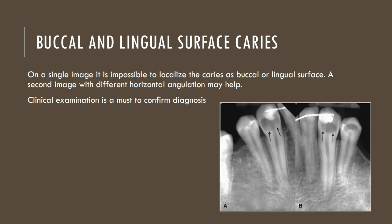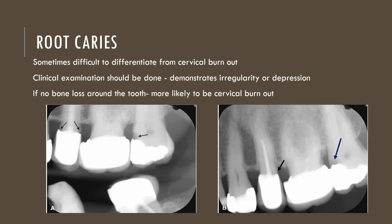Next, buccal and lingual surface caries. On a single image, it is impossible to localize caries as buccal or lingual surface simply because they superimpose over each other. A second image with a different horizontal angulation may help to differentiate. Clinical examination is a must to confirm diagnosis. When it comes to root caries, it may sometimes be difficult to differentiate from cervical burnout, and clinical examination should come in handy.